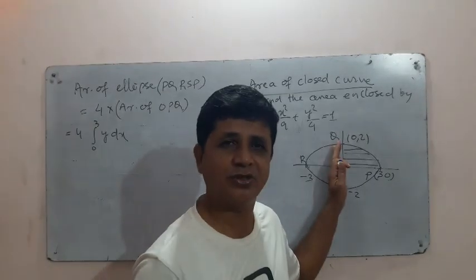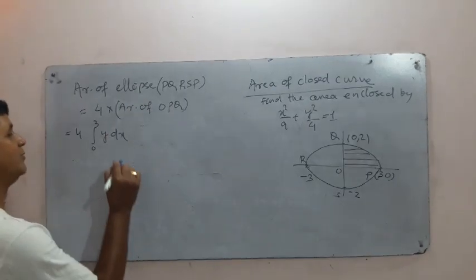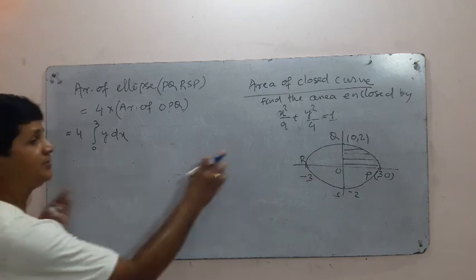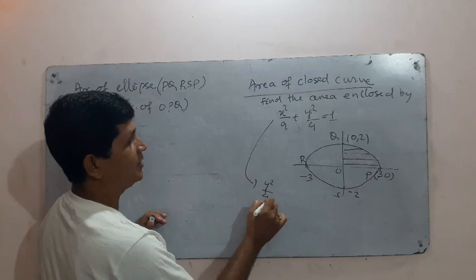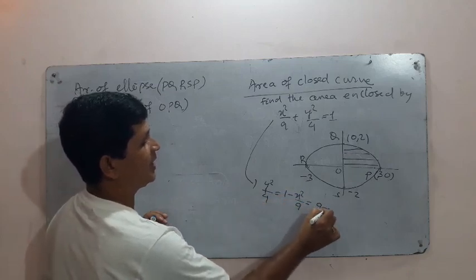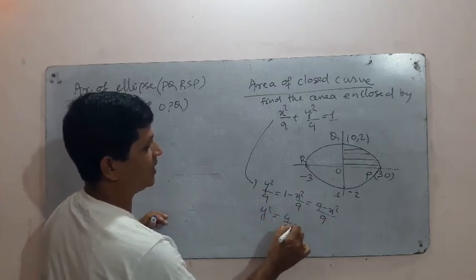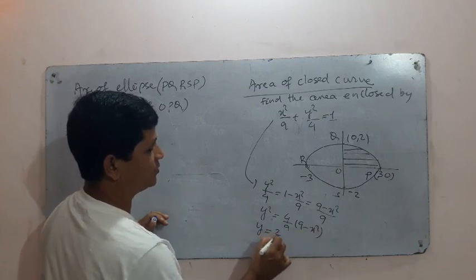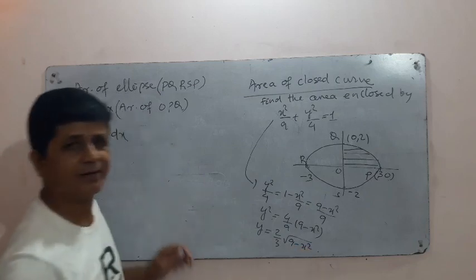Note that y and x are both variables, so you can write x dy as well — it is y dx or x dy, both being variable. Now we determine the value of y from the equation. From y²/4 = 1 - x²/9 = (9 - x²)/9, so y² = (4/9)(9 - x²).